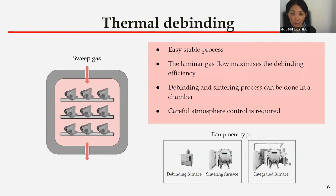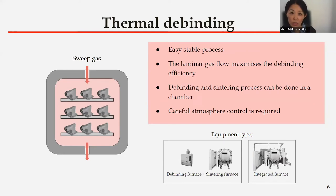The first type is thermal debinding. As mentioned previously, this is the oldest method and it is a stable process; however it is time-consuming. The laminar gas flow maximizes the debinding processing efficiency, yet the reaction progresses quite slowly. On the other hand, it is possible to do both debinding and sintering in one chamber, though it requires careful atmospheric control and a special vacuum line. If done in a one-chamber process, the most fragile brown parts — which are left after removing the majority of the binder — don't need to be handled. Thus production yield will likely improve, and with smaller and more complicated component designs this process with less brown-part handling is greatly beneficial.